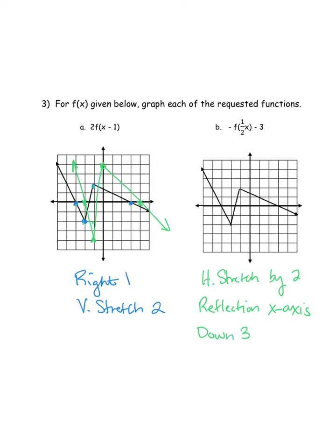I'm going to use the same points I used on the previous example. Switching colors — I'm going to horizontally stretch by two. That first point on the x-axis is currently three away from the y-axis, so to stretch by two it's going to be six away from the y-axis, putting me right here where my little red dot is. Then I reflect it over the x-axis — it's on the x-axis, so that doesn't change anything. Then down three. That's going to be that first point.